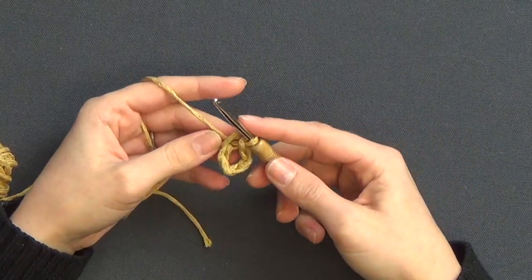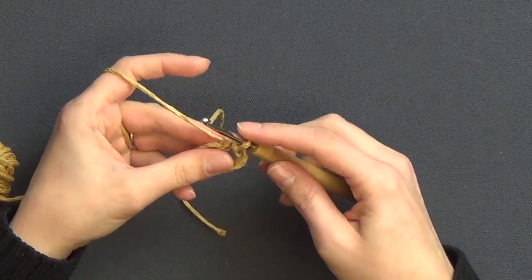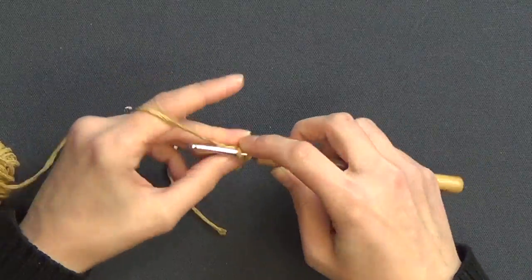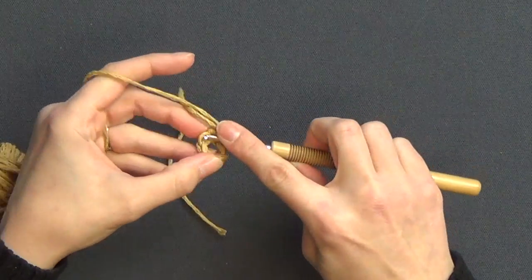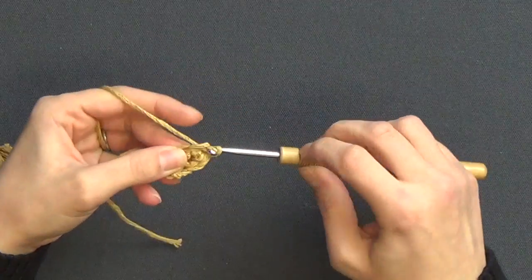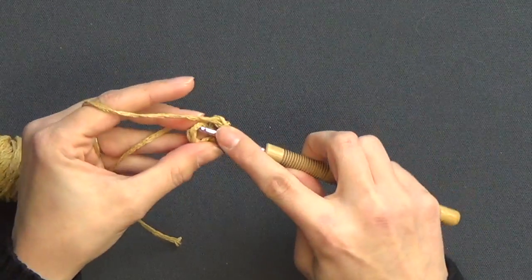And then you're going to single crochet in each stitch around until the handle is the desired length. So I made my handle 19 inches long. You may find that you want one longer or shorter depending on the purpose for your basket.